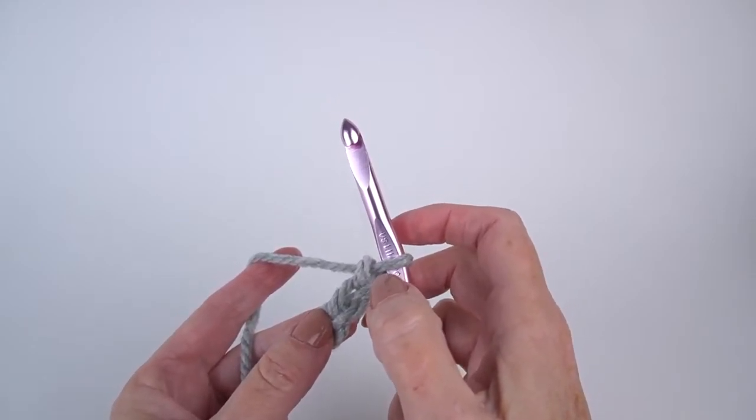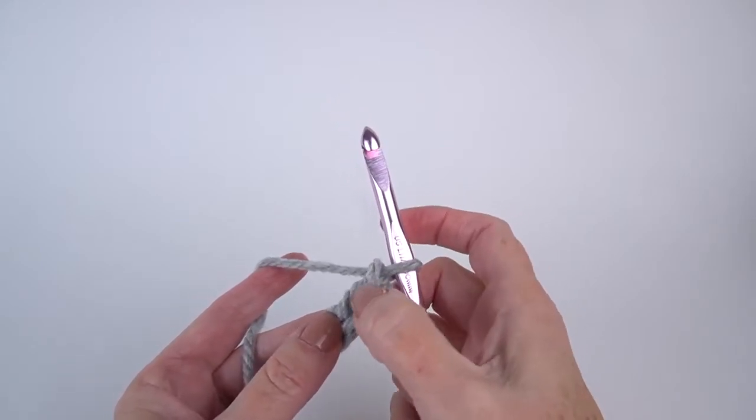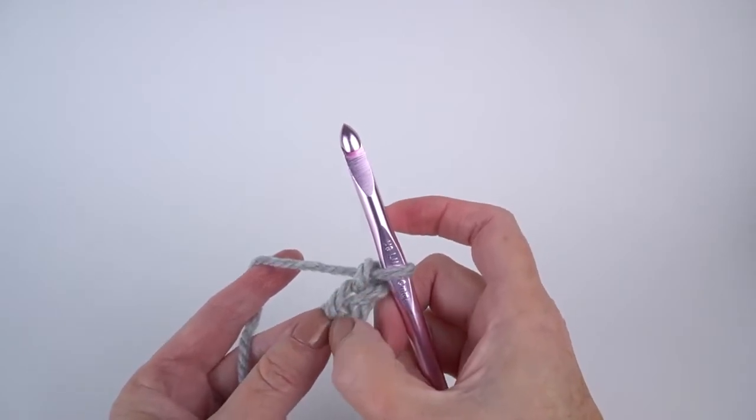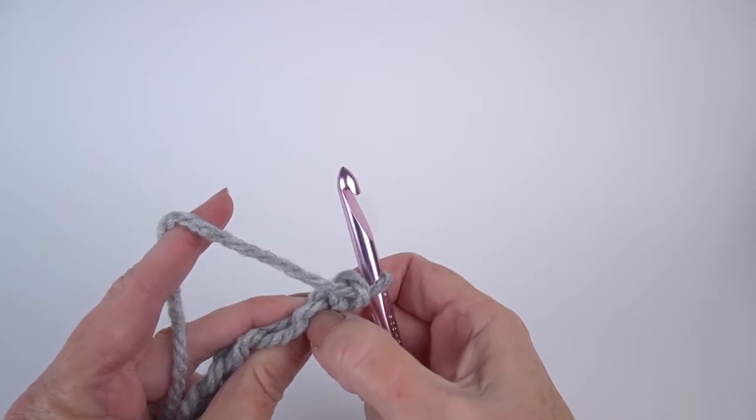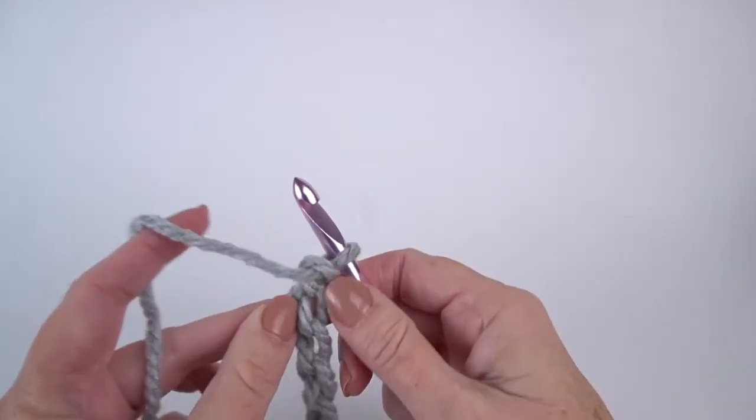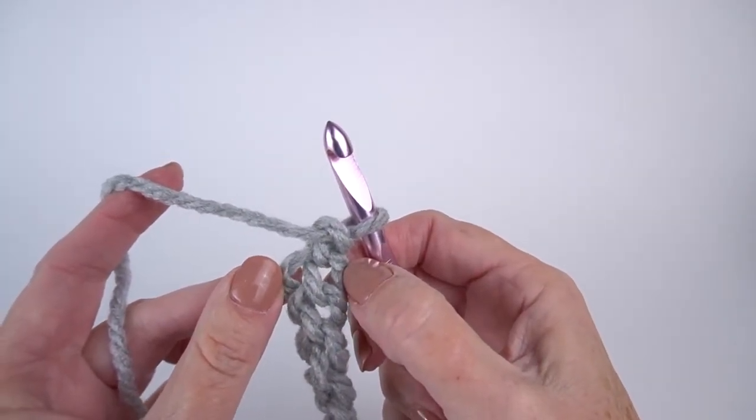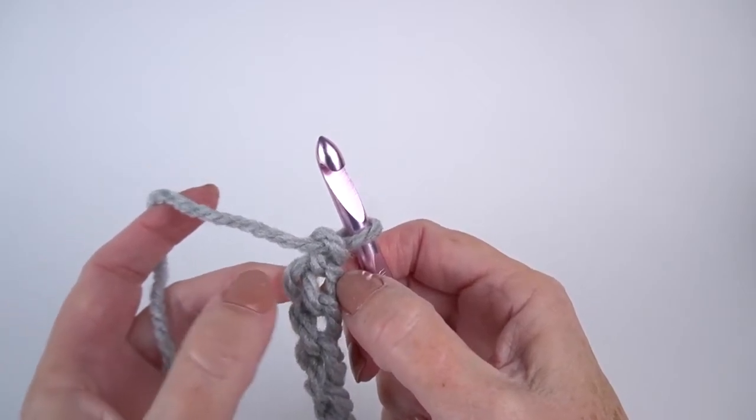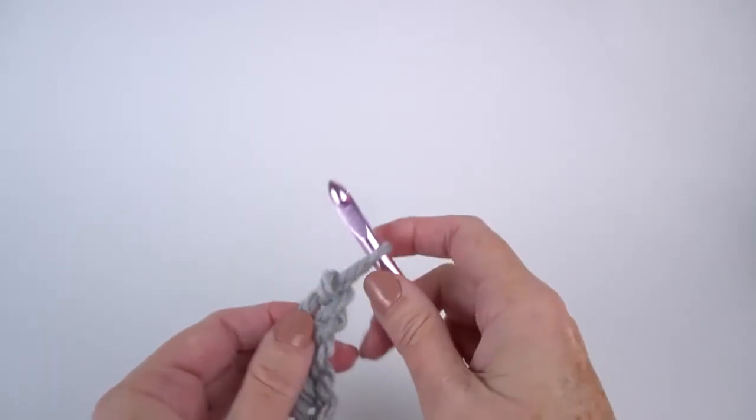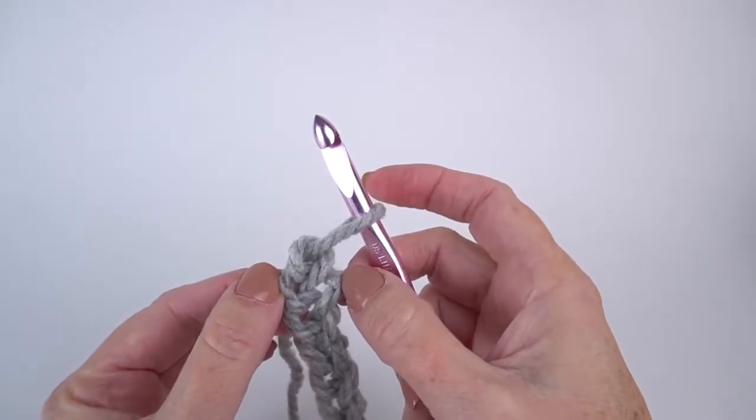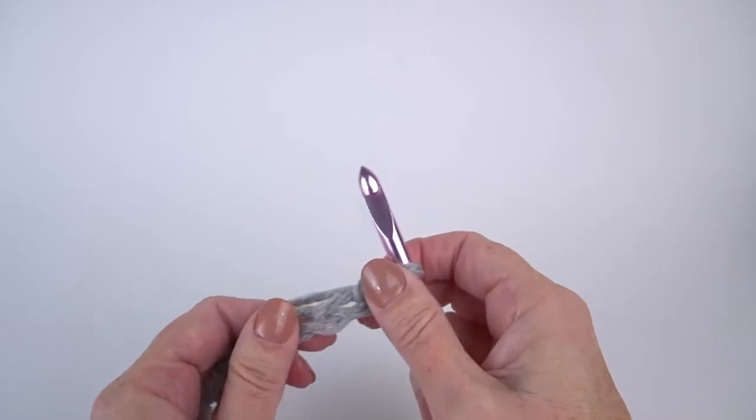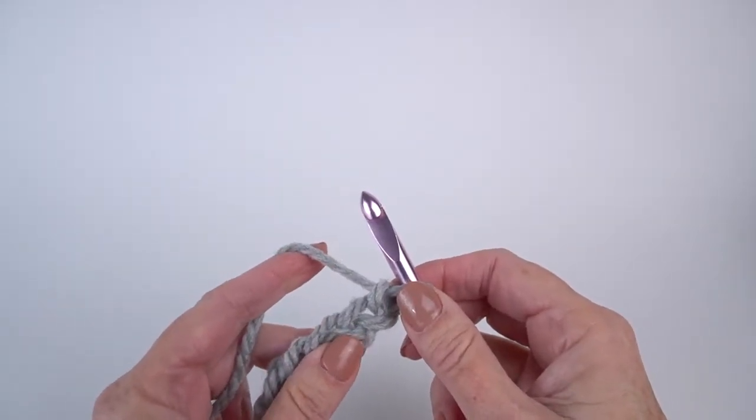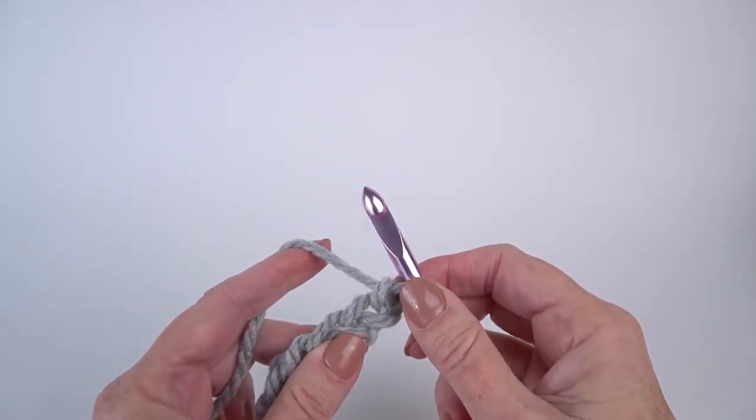So every part of a chain stitch has three legs. The two legs of the stitch that make up the V on the front, and then the bump that goes with it. Let's pull this way apart. So you see, looking at it from the back, here's three legs. One, two, three. Looking at it from the front, let's pull that V way apart, and you can see one, two, three legs. So if you're going from the front, you can work under one of the legs of the stitches, or two.